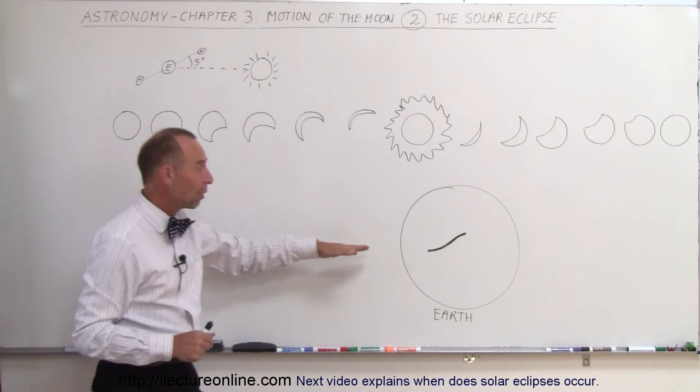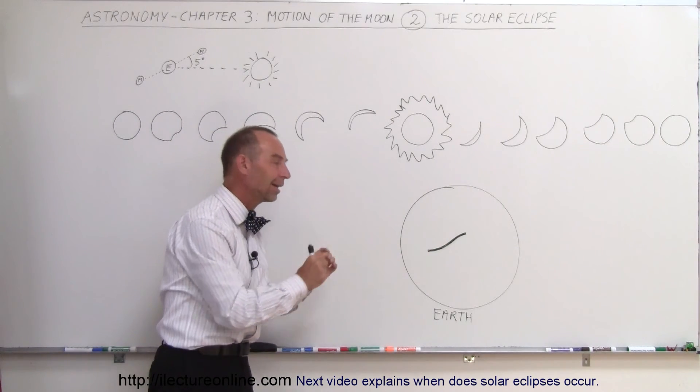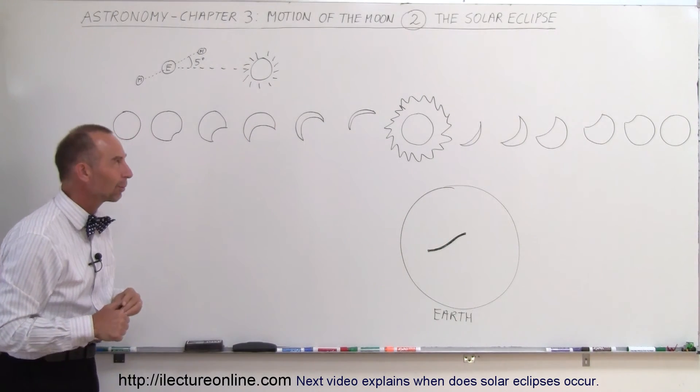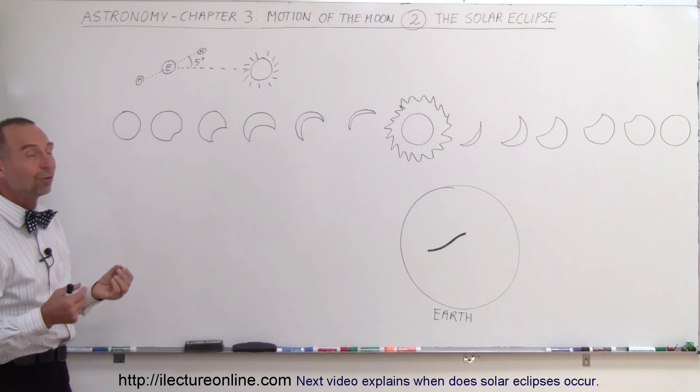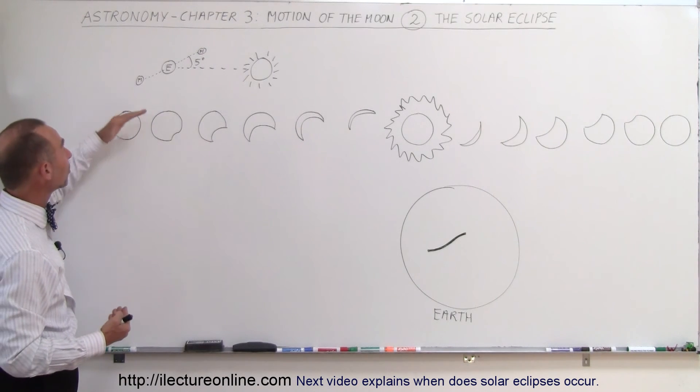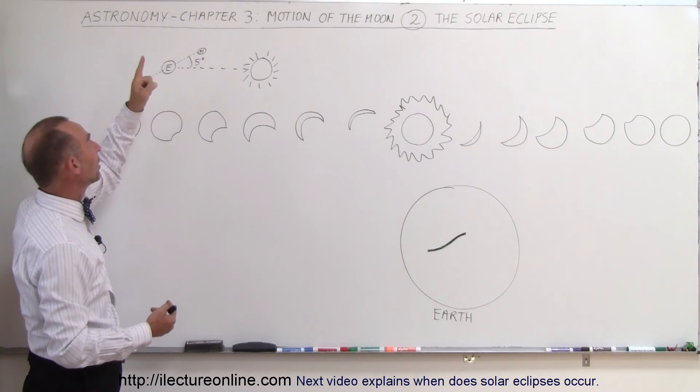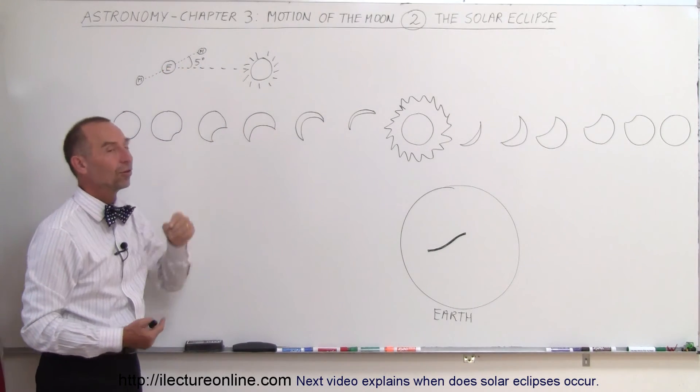And only for a very small percentage of people on the Earth that just happen to be right there on the location where the solar eclipse occurs. And again, the reason why it's a rare event is because most of the time the Moon will not be on the ecliptic plane when it passes between the line from the Earth to the Sun.